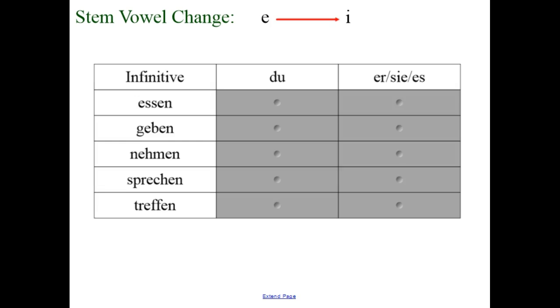The second stem vowel change that you might see is an E to an I. Essen becomes du isst, and er/sie/es isst. Geben: du gibst, er/sie/es gibt.